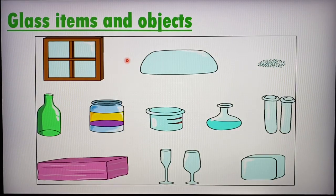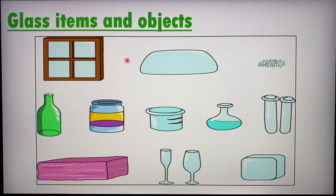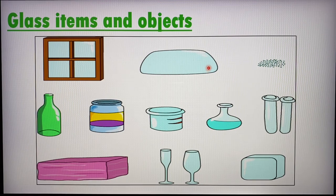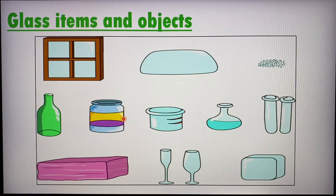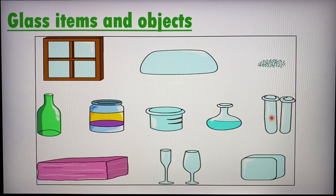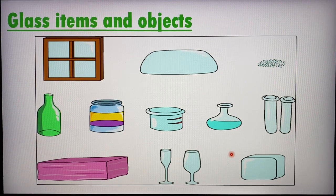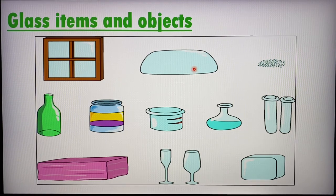Next we move on to glass. These are some common items made of glass: windows, the windscreen or rear screen of vehicles and cars, bottles, jars, glasses, and test tubes which you'll use in secondary school. All these objects are made of glass. Basically, what you want these objects to have is the ability to see through and to be quite strong and durable.